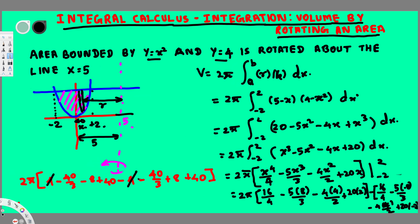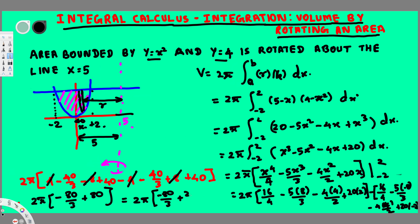Cancelling terms: positive 4 and negative 4 cancel; negative 8 and positive 8 cancel. We are left with negative 40/3 and negative 40/3, giving negative 80/3, plus 80. Converting 80 to thirds gives 240/3, so 240/3 minus 80/3 equals 160/3. Multiplying by 2π gives the result 320π/3.